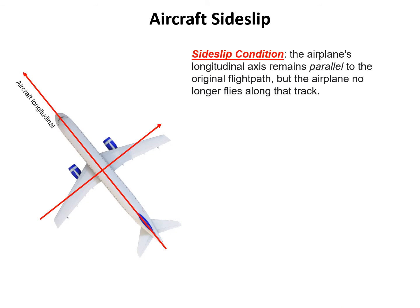The first task is to define the sideslip condition. The definition is the airplane's longitudinal axis remains parallel to the original flight path, but the airplane no longer flies along that track. We have a model aircraft with its longitudinal axis indicated, which is its original flight path. Instead of following the original flight path, it now flies at a velocity V. That's the actual path it follows. Now we know what's called sideslip condition.